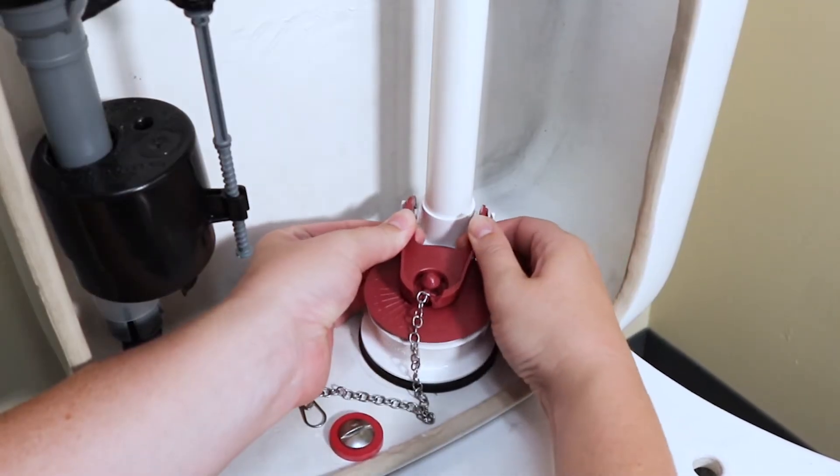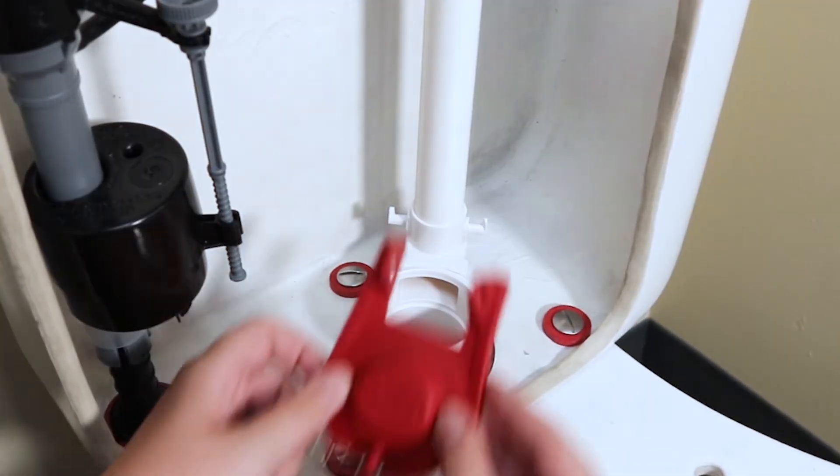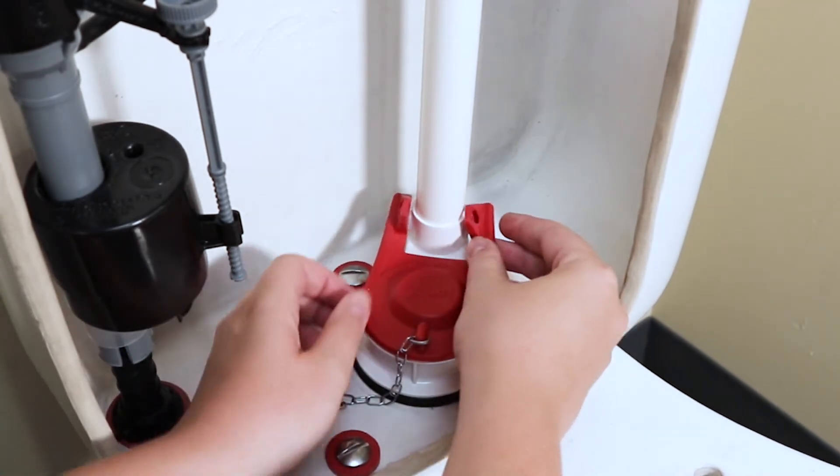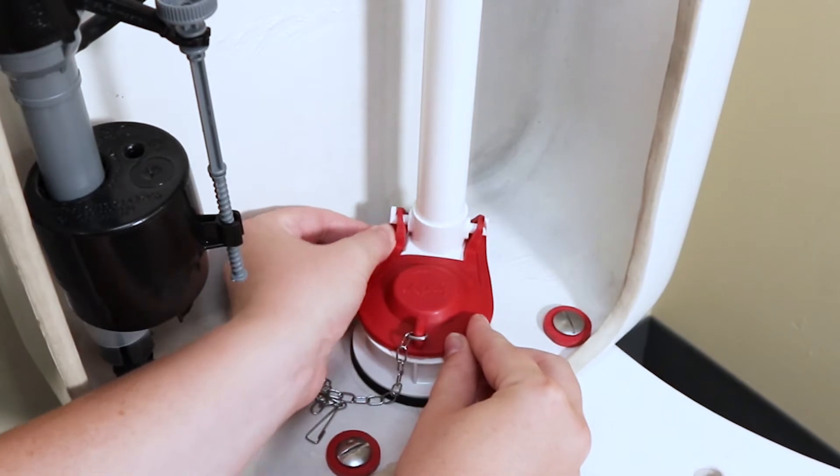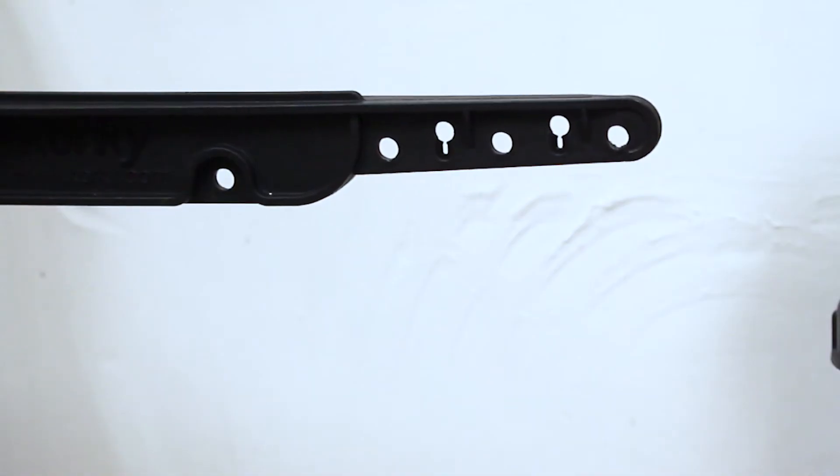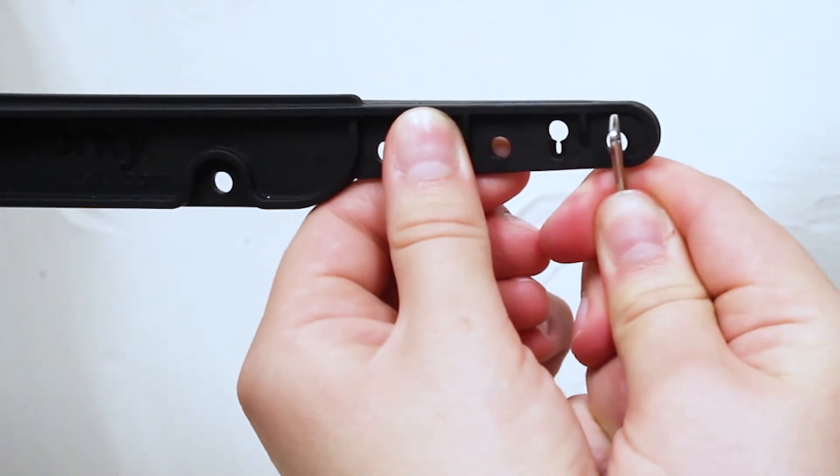Remove the old flapper. Install the new flapper. Attach the flapper ears to the tabs of the flush valve. Then attach the flapper chain to the flush lever with minimal slack.